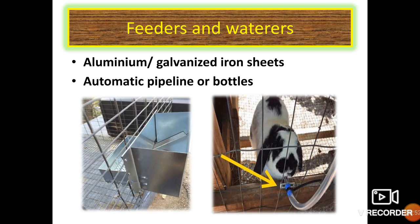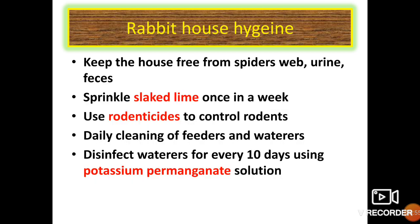For rabbit house hygiene, health care is an important aspect of rabbit farming because only healthy rabbit stock can contribute to full potential in terms of growth, reproduction and production. To maintain hygiene: keep the house free from spider webs, urine and feces; sprinkle slaked lime once a week; use rodenticide to control rodents; do daily cleaning of feeders and waterers; and disinfect the water every 10 days using potassium permanganate solution.